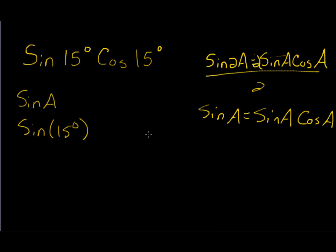If 30 degrees has sine of 1 half, half of that will give you 1 fourth. And there's your final answer.